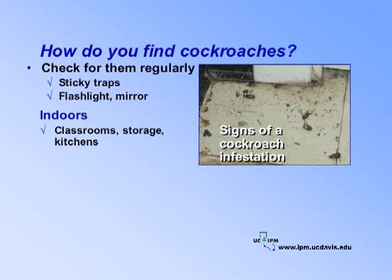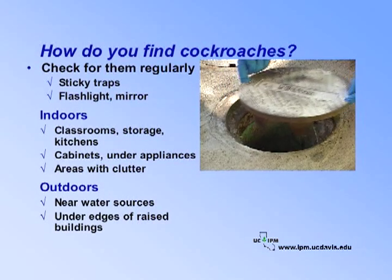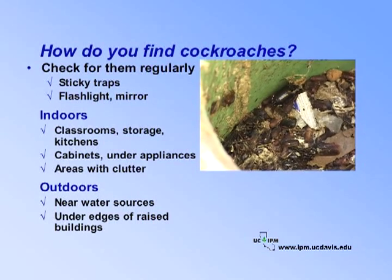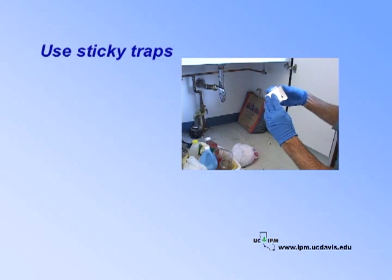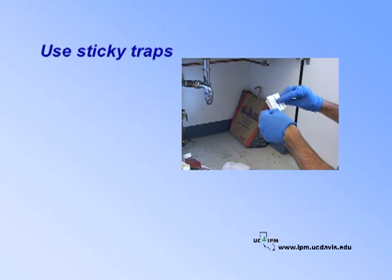Check dark areas in classrooms, storage rooms, and kitchens. Inspect under cabinets, in cracks and crevices, near water sources, under refrigerators or other appliances, and near areas with a lot of clutter. Be sure to ask teachers or food service staff normally in these areas where they may have seen roaches. Outdoors, look near water meter boxes or other water sources, and underneath edges of raised buildings. Sticky traps provide the best way to monitor for cockroaches. Place traps where you see signs of roach activity — fecal matter, eggs, or dead roaches.